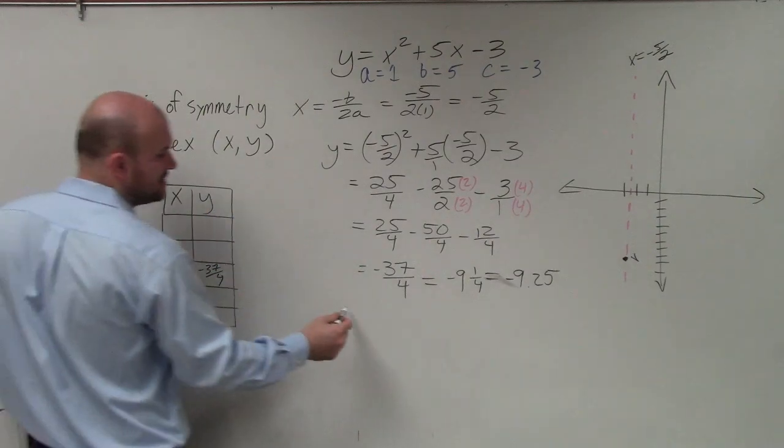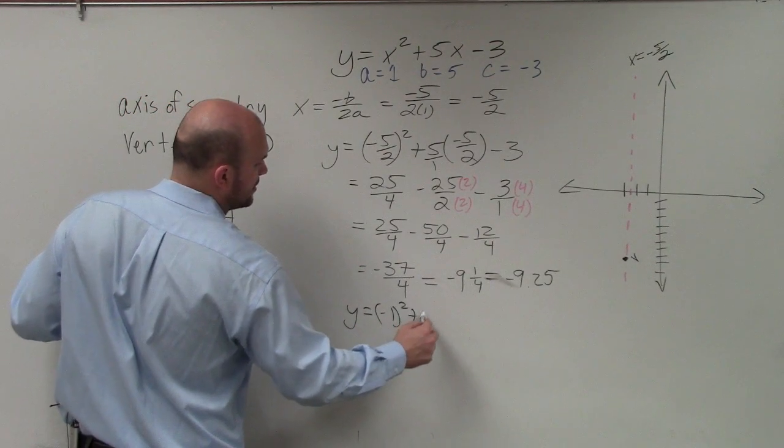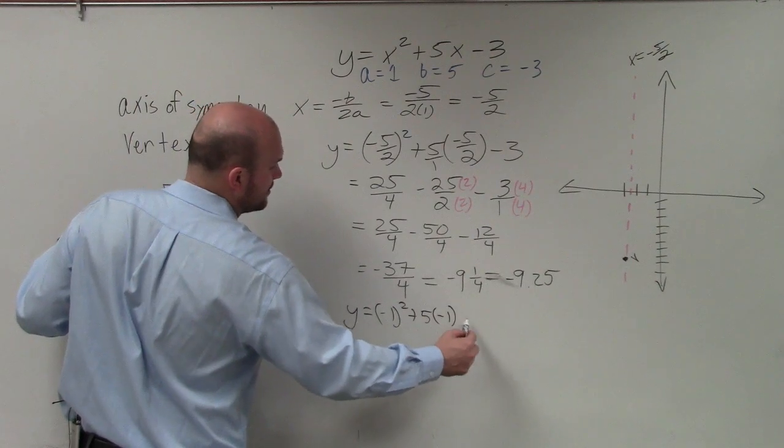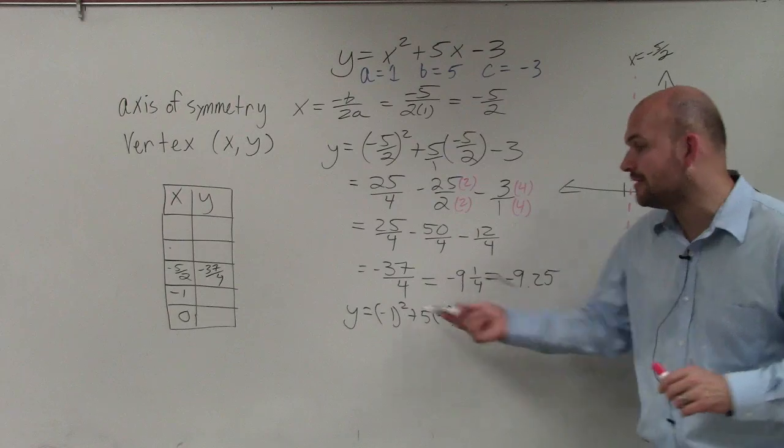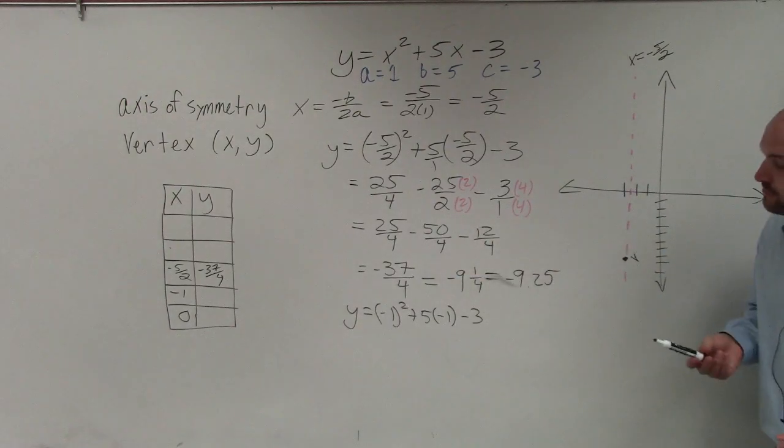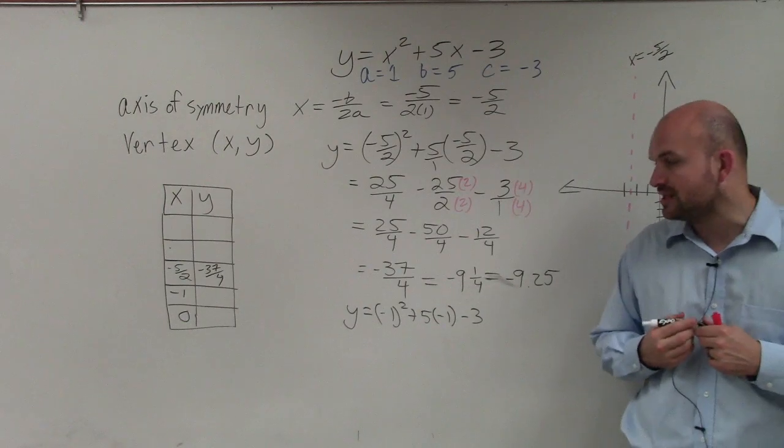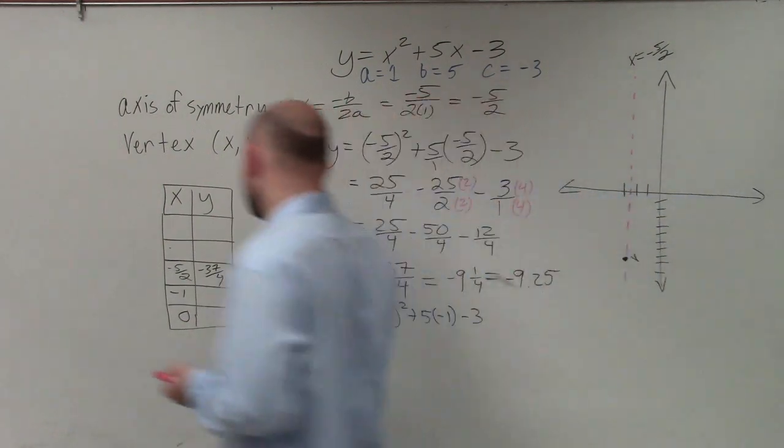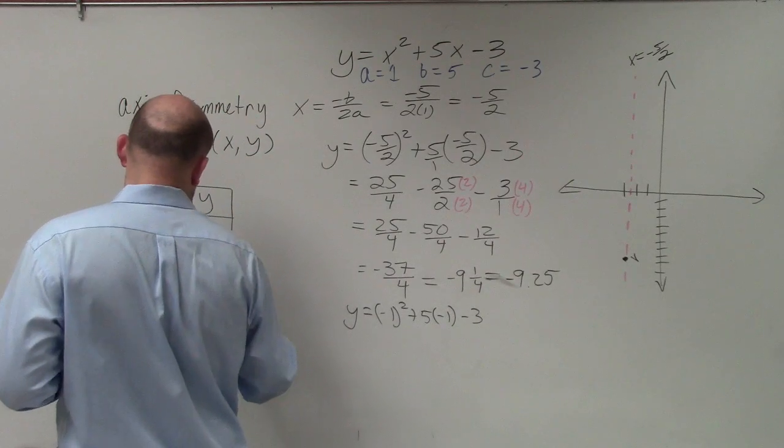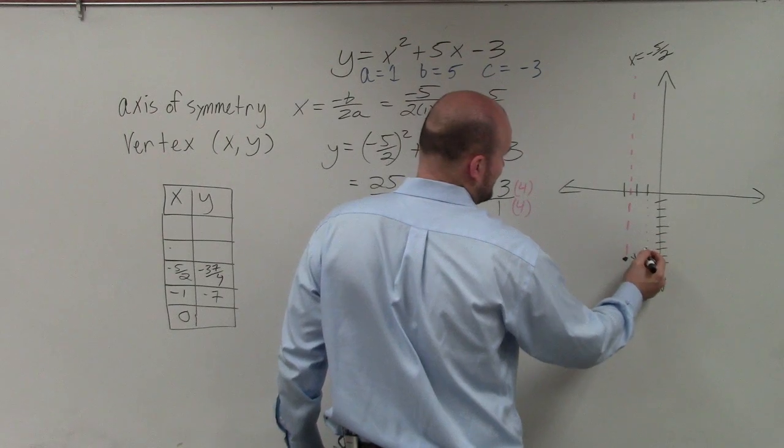So I'm just going to choose two points to the right. Now we do the same thing that we did before. y equals negative 1 squared plus 5 times negative 1 minus 3. Now to save a little time, I'm going to do this in my head, but I'll say it out loud. Negative 1 squared is positive 1. 5 times negative 1 is negative 5. So positive 1 plus negative 5 is negative 4. Minus 3 would be negative 7. So at that point, I go negative 1 down 7. 1, 2, 3, 4, 5, 6, 7.